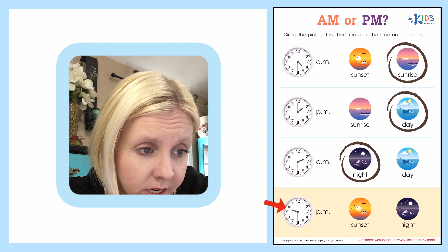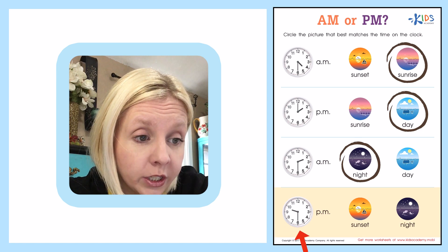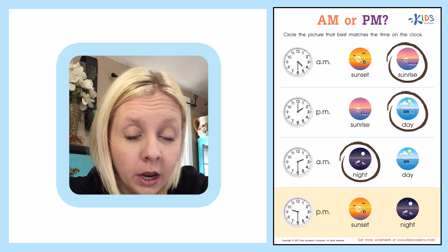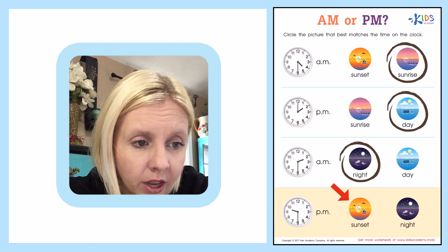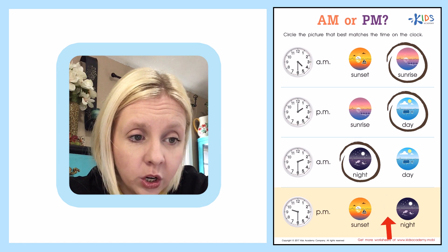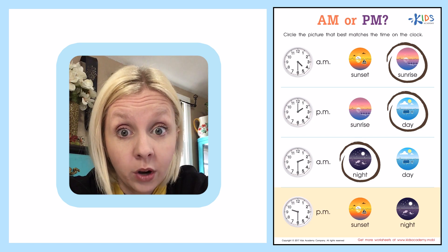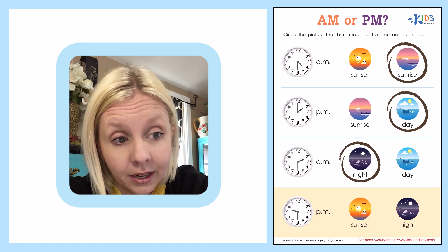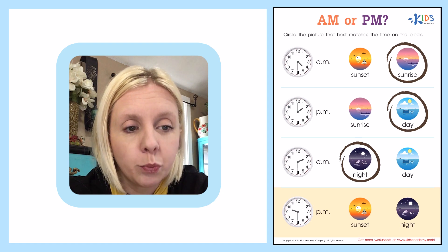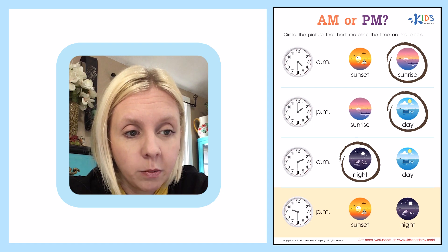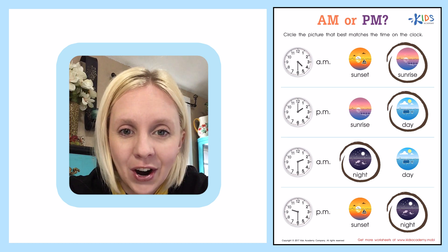The last one: the shorthand is between the nine and the ten, and the long hand is on the six, which is 30, so it's 9:30 PM — usually about the time we're getting ready for bed. Is that the sunset or the nighttime? It's a little tricky because depending on where you live it could be either, but the correct answer here is night because it's late enough for bed. So we're going to circle night. Good job!